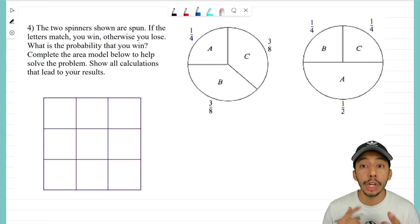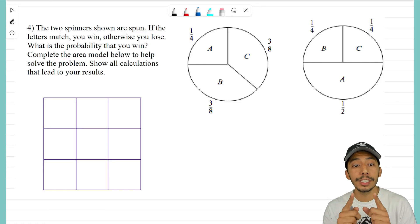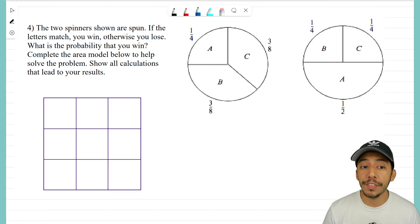You want to find out what's the probability that you win. It says to complete the area model below to help you solve the problem and to show all calculations that lead to your results. So we have an area model there—we have the bare bones of it. We want to set it up so that we can help us solve this problem. We want to know what's the chance of matching up the A's, the B's, the C's.